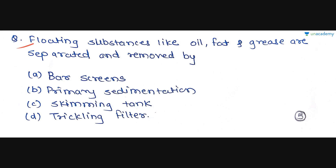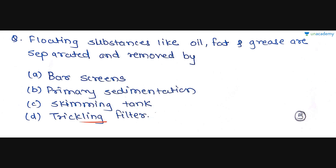A sample MCQ: 'Floating substances like oil, fat and grease are separated and removed by — (A) bar screens, (B) primary sedimentation, (C) Skimming Tank, or (D) trickling filter.' The correct answer is Option C: Skimming Tank. Bar screens remove floating materials but not oil and grease; primary sedimentation also does not remove oil and grease; and trickling filter is part of secondary treatment.